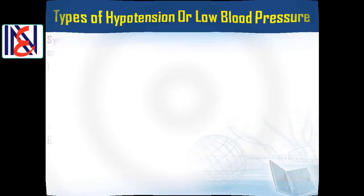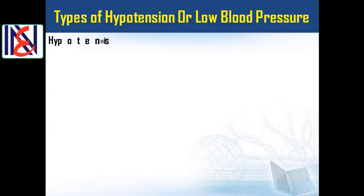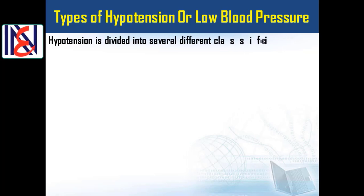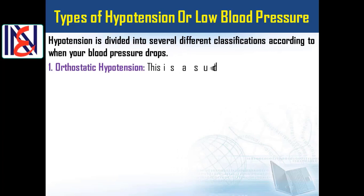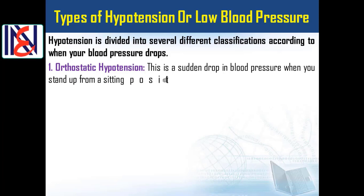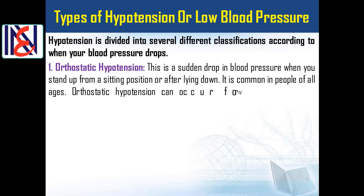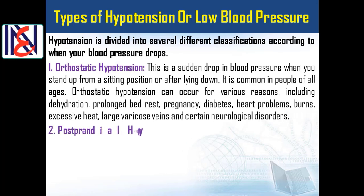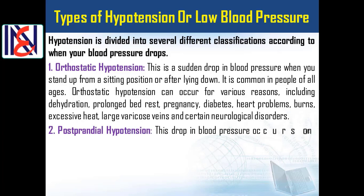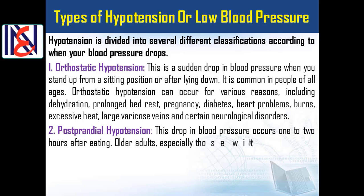Types of hypotension or low blood pressure: hypotension is divided into several different classifications according to when your blood pressure drops. 1) Orthostatic hypotension: this is a sudden drop in blood pressure when you stand up from a sitting position or after lying down. It is common in people of all ages, and can occur for various reasons including dehydration, prolonged bed rest, pregnancy, diabetes, heart problems, burns, excessive heat, large varicose veins, and certain neurological disorders.